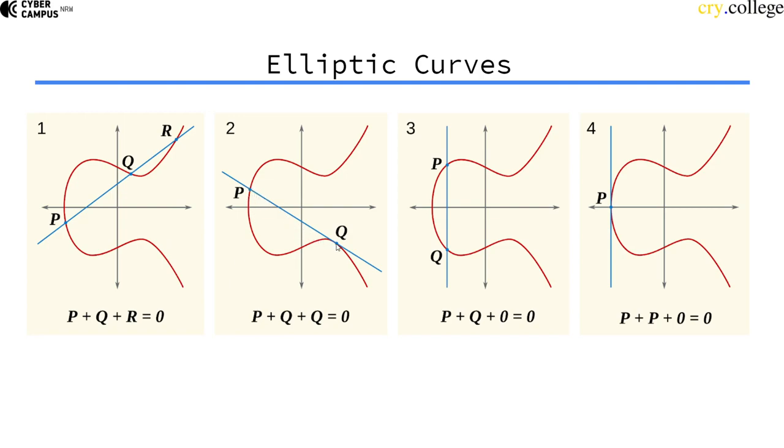And the case where the line goes through one specific point twice. We'll talk more about that later. And the case where the two points are already inverse to each other, and they're flipped on the x-axis. Then this third point that it goes through is the point at infinity.